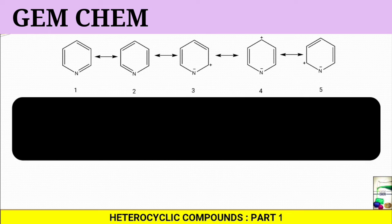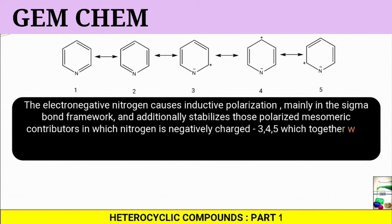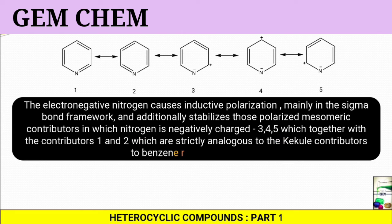If we go deeper into these details, we can see that one and two are the Kekule structures just like benzene. Three, four, five have charge separation. So we can say that the electronegative nitrogen causes inductive polarization mainly in the sigma bond framework and additionally stabilizes those polarized mesomeric contributors in which nitrogen is negatively charged.